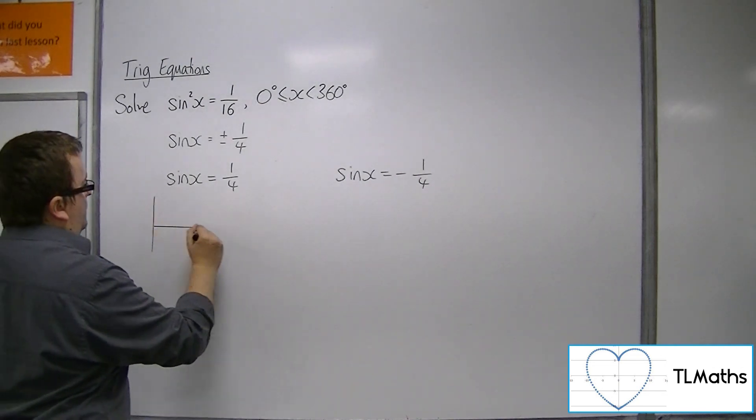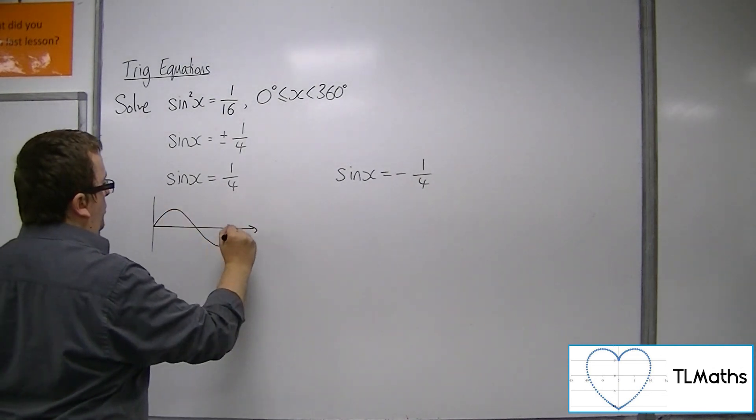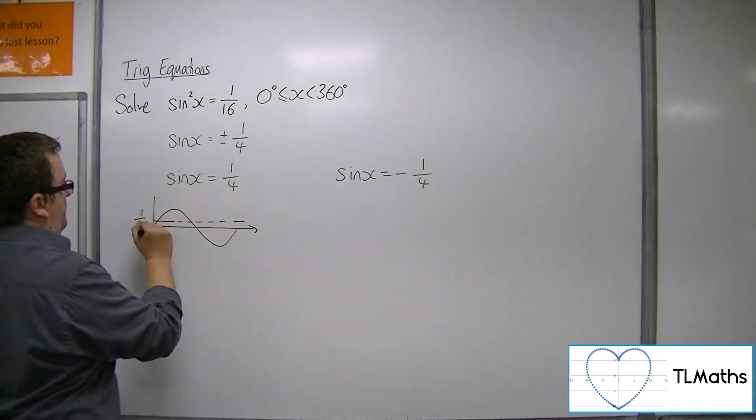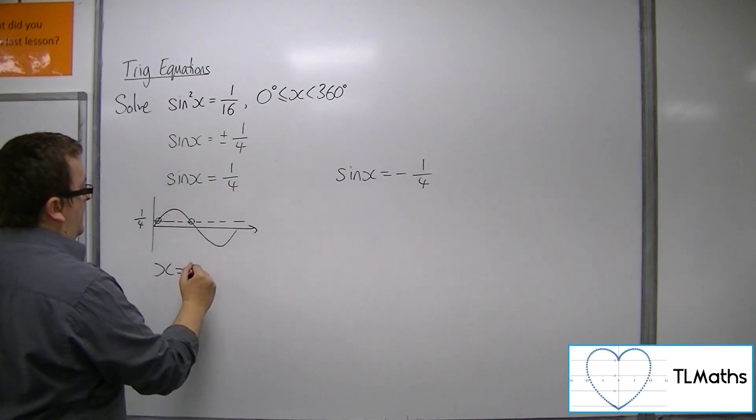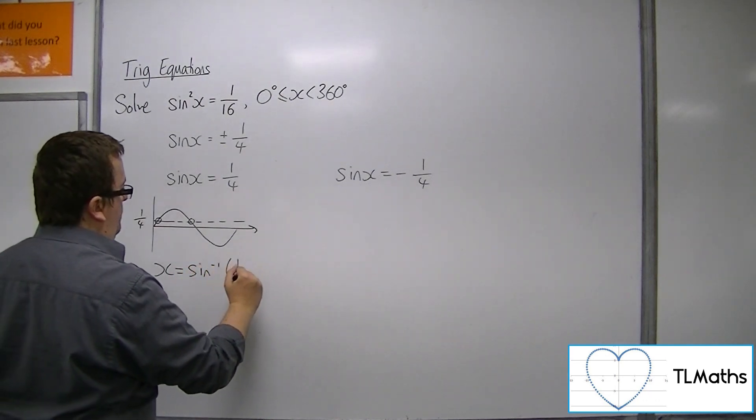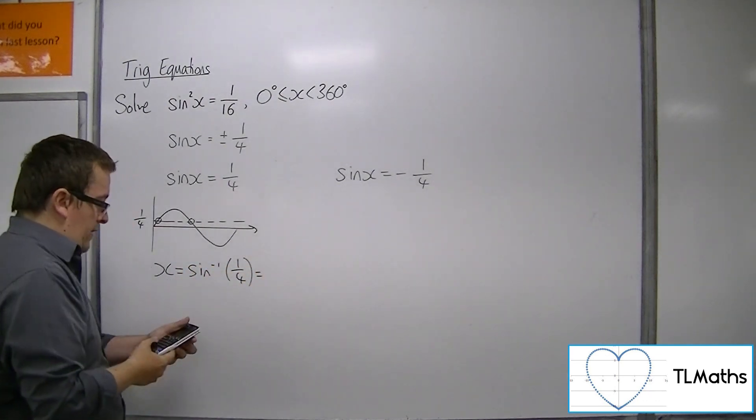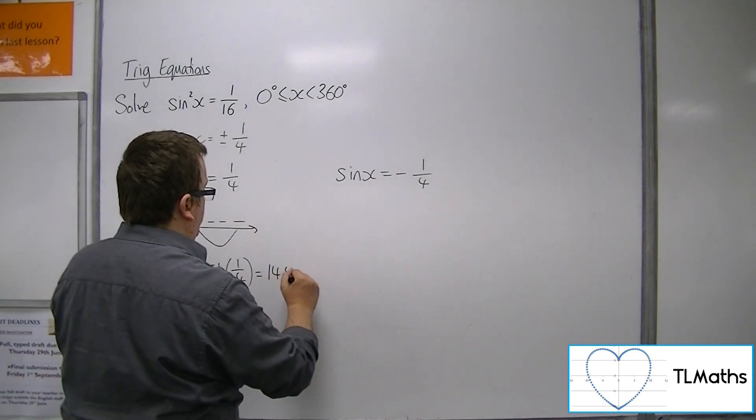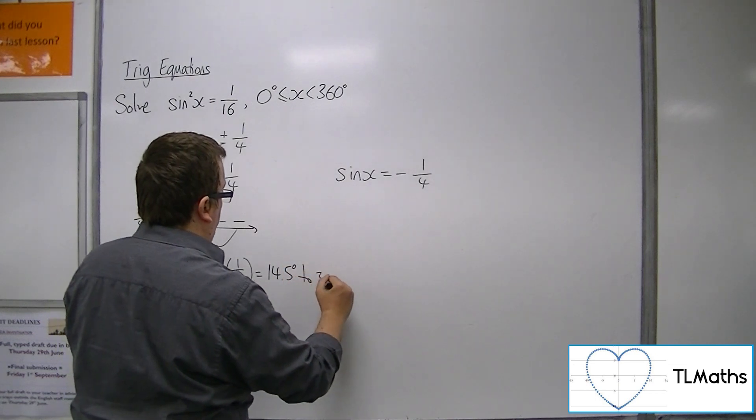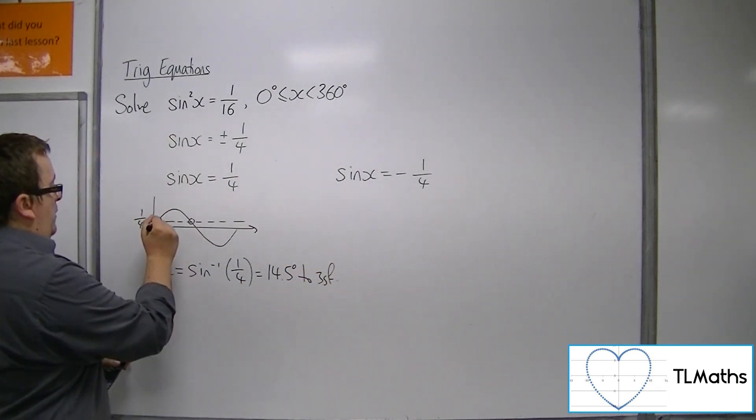Now, for sine x equals 1/4, there's 1/4, so I'm going to get two possible solutions here. So the first solution, inverse sine of 1/4, is 14.5 degrees to 3 significant figures. So that's that one there.